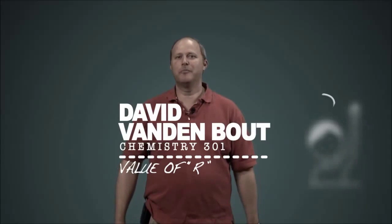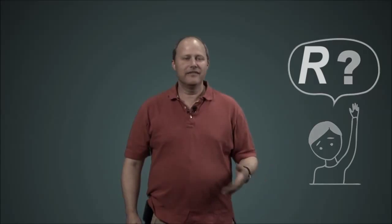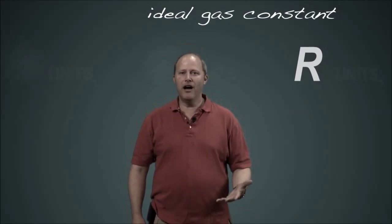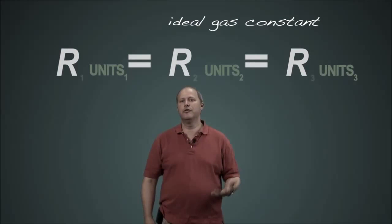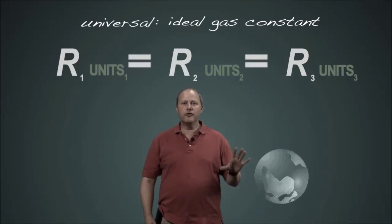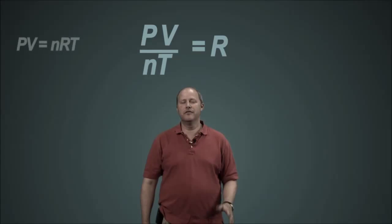So students always ask me, which value of R do I use for this problem? And I say there seem to be many, many, many different choices. And the answer is there's really only one value for the ideal gas constant. But it has lots of different units. It is a universal constant. It's pressure times volume divided by the numbers of moles times temperature.